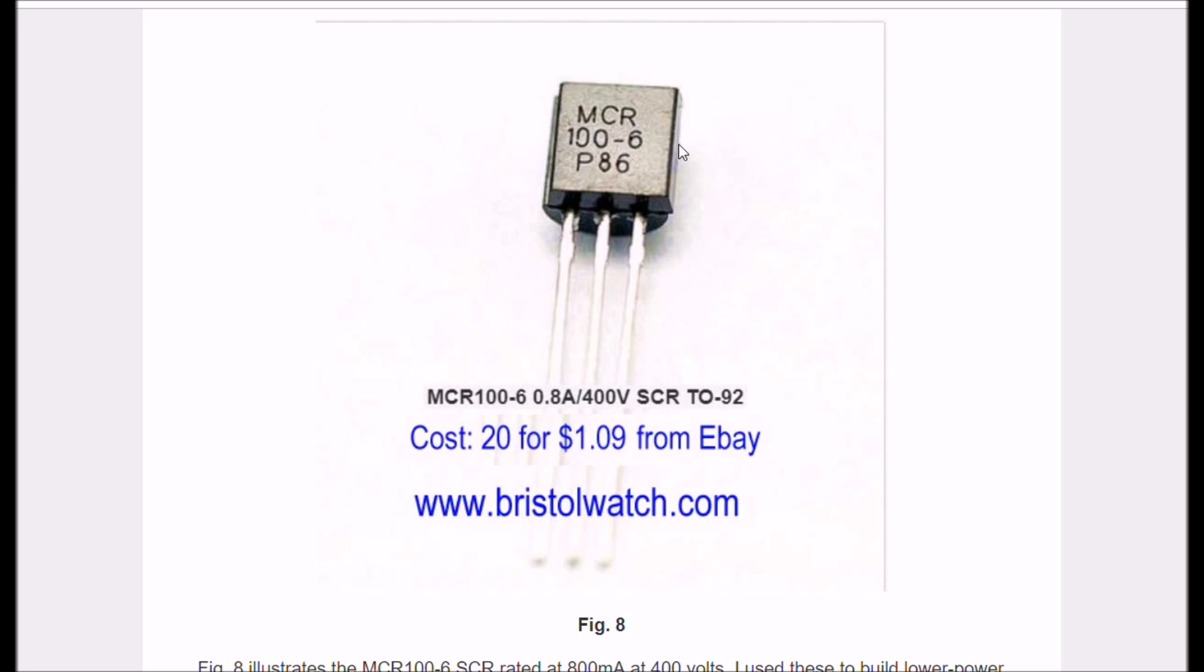This is the MCR100-6. They're rated at 400 volts at 800 milliamps. They're cheap - 20 for a dollar nine from eBay. Lots of people are selling them. So if you want to cobble together test SCR circuits, keep your voltages down to about 24 volts AC and use these small, cheap devices. If you blow them up, fine, you're not out much.